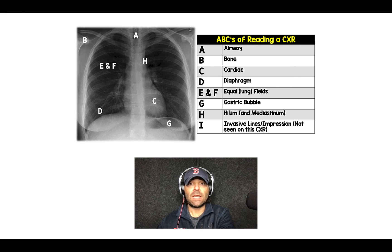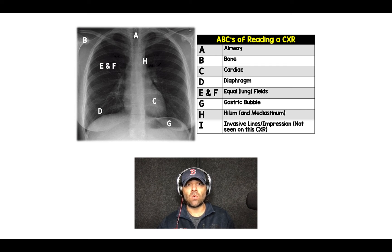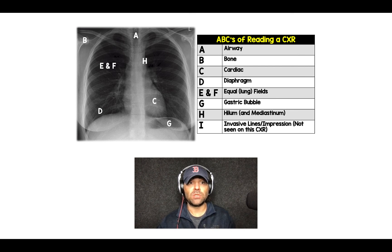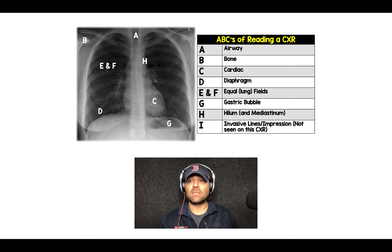And finally, the last thing — which I don't have on this chest x-ray — is the I, which stands for invasive lines. This chest x-ray doesn't have any central lines, dialysis catheters, or nasogastric tubes to point out, but that would be the last component. And so there you have it — that's the ABCs of reading a chest x-ray.